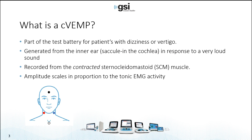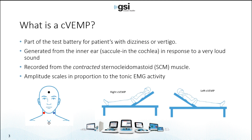C VEMP is part of the test battery for patients with dizziness or vertigo. It's generated from the saccule, which is located in the cochlea, and it occurs in response to a very loud sound or a large vibration. It's recorded from the contracted sternocleidomastoid muscle — the SCM muscle — which runs from behind the ear to the sternum. The amplitude of the C VEMP waveform scales in proportion to the tonic EMG activity, so the stronger the contraction, the bigger the C VEMP. In this example, the patient is lifting and holding their head off the table for the duration of the test.